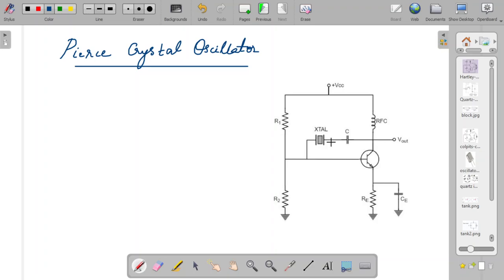So the crystal oscillator is set in series with the base and the collector part. So this is where it comes.